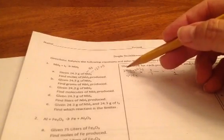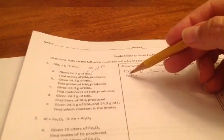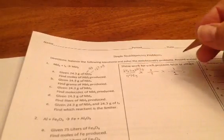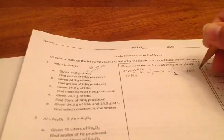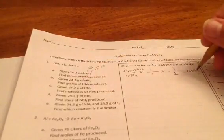When I take 24.3 and divide it by the 474 grams, I get 0.05, and we solved for moles.